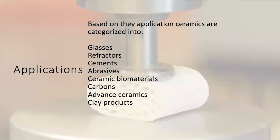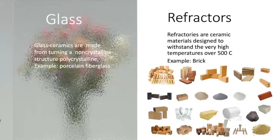Based on their applications, ceramics are categorized into glasses, refractors, cement, abrasives, ceramic biomaterials, carbons, advanced ceramics, and clay. Glasses are ceramics made from turning a non-crystalline structure, like quartz, into a polycrystalline structure. Refractors are ceramics designed to withstand high levels of temperature, for example, bricks.